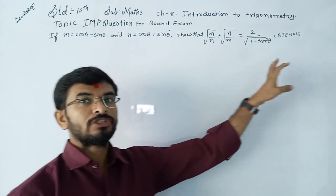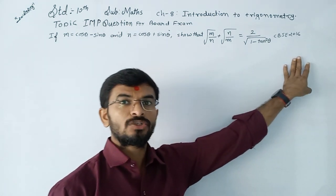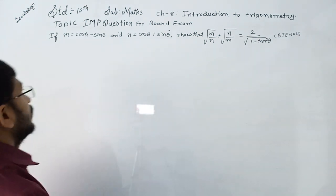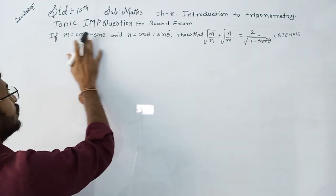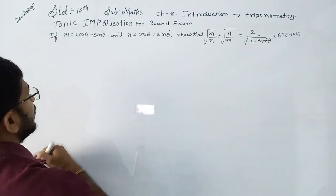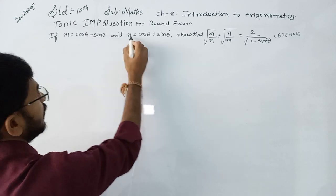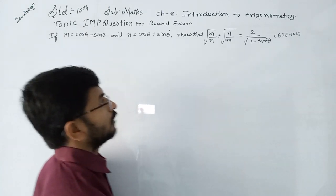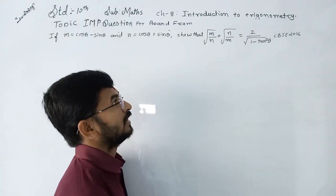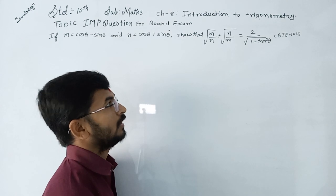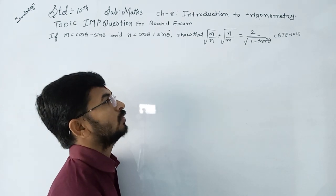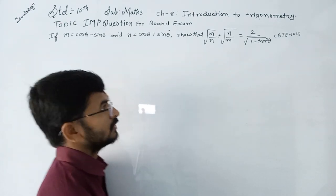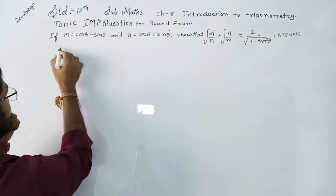Hey guys, we have one question that was asked in the CPSC 2016 examination. The question is: if M is equal to cos theta minus sin theta and N is equal to cos theta plus sin theta, then show that the square root of M upon N plus the square root of N upon M is equal to 2 upon the square root of 1 minus sin square theta.